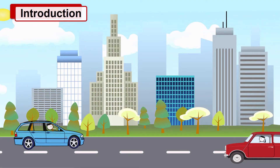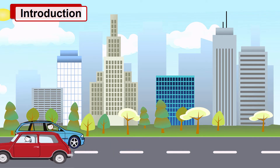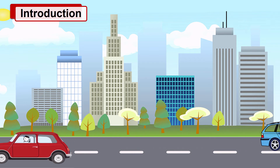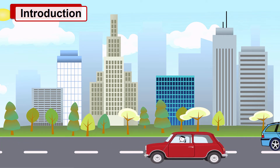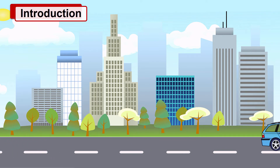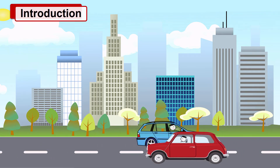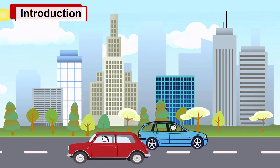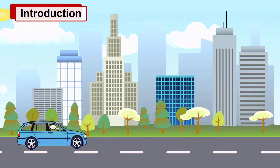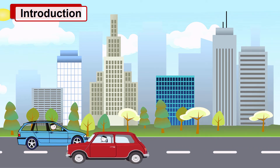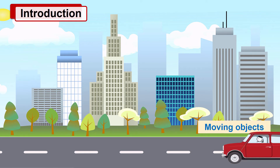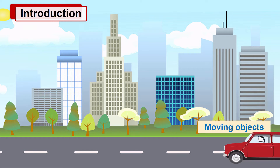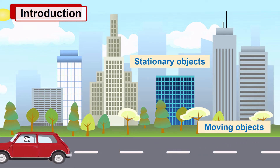In our daily life, we see many objects like vehicles on the road, houses, and trees. Some of them are moving, whereas some are stationary. The objects which change their position are called moving objects, and the objects which do not change their position are called stationary objects. Cars on the road are changing their position, hence they are examples of moving objects. Buildings and trees are not changing their position, hence these are examples of stationary objects.